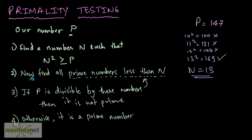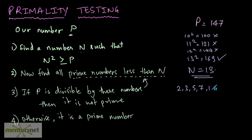The second step says: find all prime numbers less than n. Find all prime numbers which are less than 13. Note that 13 itself is a prime number. So the prime numbers which are less than 13 are: 2, 3, 5, 7, 11, and 13 itself.